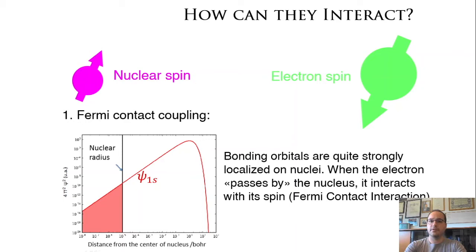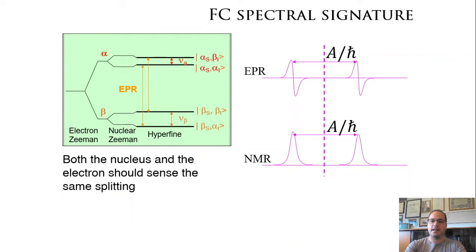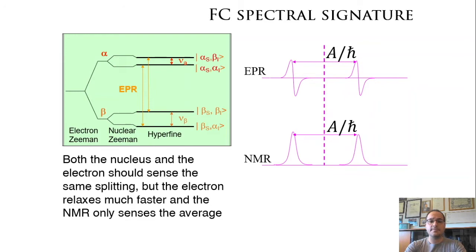As for the J coupling in NMR, you would expect two coupled spins to have the same splitting pattern given in this case by the hyperfine coupling. This is not the case because the electron relaxes much faster than the nucleus, and therefore the NMR signal only senses the average of the electron.